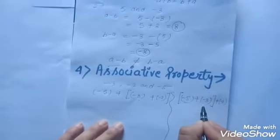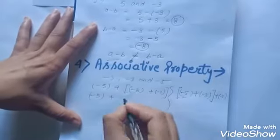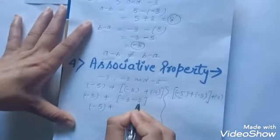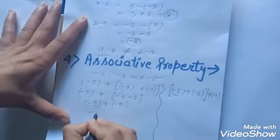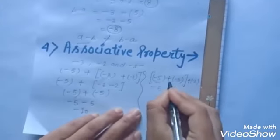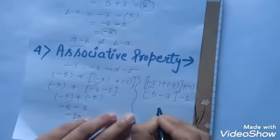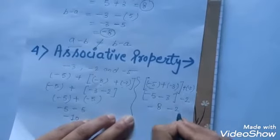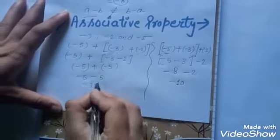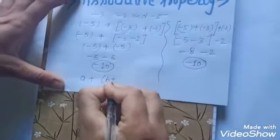Solve it: first solve the bracket — minus three plus minus two: minus plus minus is minus, three plus two is five, sign is negative, so minus five. Then minus five plus minus five: minus five minus five equals minus ten. For the second grouping: minus five plus minus three equals minus eight (sign negative), then minus eight plus minus two equals minus ten. In both cases we get the same answer: minus ten.